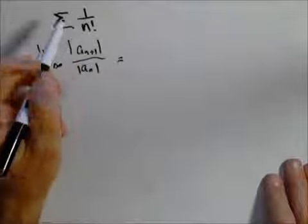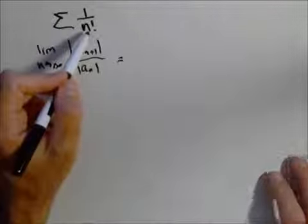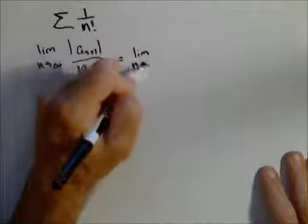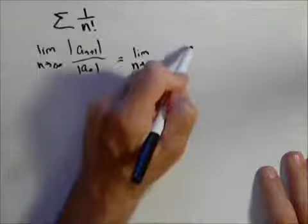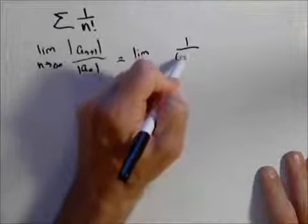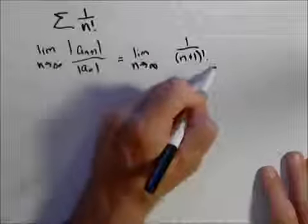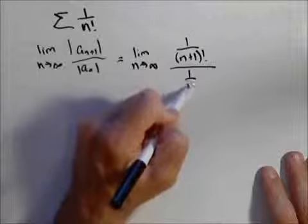In this case, a sub n is one over n factorial. So I'm looking at the limit as n goes to infinity of one over n plus one factorial over one over n factorial.